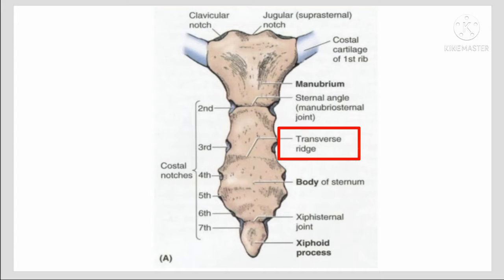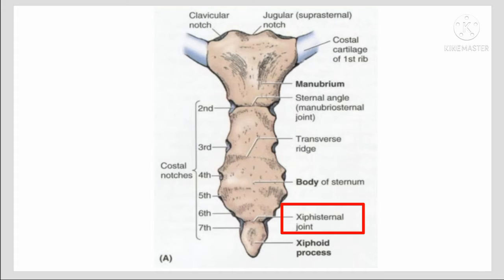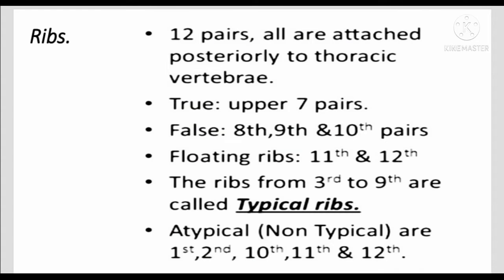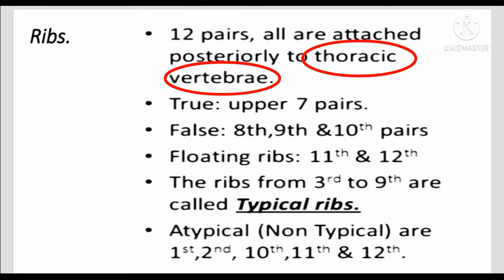This is the transverse ridge. The joint between the body of the sternum and the xiphoid process is called the xiphisternal joint. Regarding the ribs, in total there are 12 pairs of ribs, all attached posteriorly to the thoracic vertebrae.